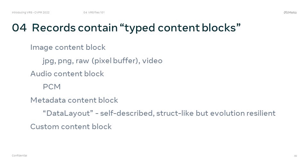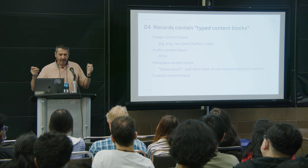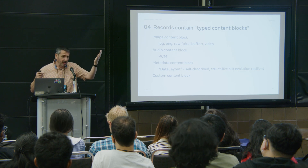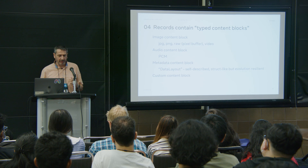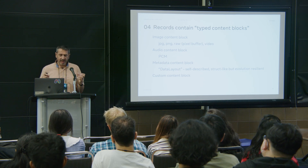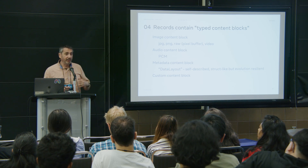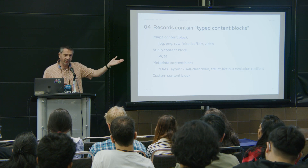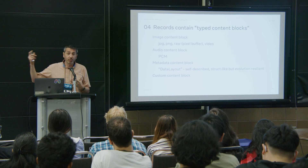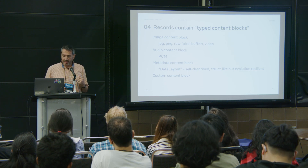Custom content blocks are for you to define — you put a binary blob and you're responsible for interpreting it. Image and audio content blocks are straightforward: JPEG, PNG, or PCM audio data. For metadata, we have what we call data layouts. Data layouts are self-described, struct-like constructs that are evolution-resilient. They look like structs, and at the binary level they actually are structs — totally binary with no overhead in the format. But the data layout definition allows you to manipulate data without fearing that a new field was introduced and suddenly all the data is shuffled. With data layouts you can read old files with new code, or read new files created after your code was written. Data layout takes care of all that for you.